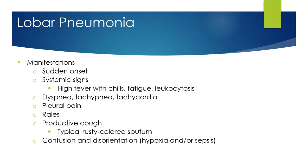Lobar pneumonia patients might also report some pleural pain. On assessment, you will hear rales in the lungs. The patient will have a productive cough, often with rusty-colored sputum. Finally, especially in the elderly, the patient might have confusion and disorientation — likely from hypoxia, the lack of gas exchange happening, or because it has progressed to the point of sepsis.